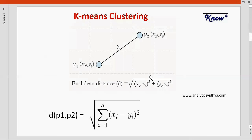Now how do you mathematically calculate this distance? This is calculated as the Euclidean distance, and the formula is shown on the screen. For a two-dimensional space, let's say we have two points P1 and P2 identified by the coordinates (x1, y1) and (x2, y2). The distance formula is the square root of (x2 minus x1) squared plus (y2 minus y1) squared.